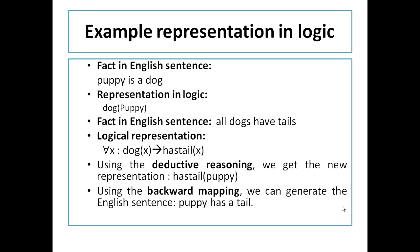Let us consider an example. Take the English sentence 'puppy is a dog', which can be represented in logical form as dog(puppy). Now consider another sentence 'all dogs have tails'. Converting this into logical representation, since there are many objects we use a quantifier. Since it says all dogs, we use the universal quantifier: for all x, if x is a dog, then x has a tail. The left-hand side is the antecedent and the right-hand side is the consequent.